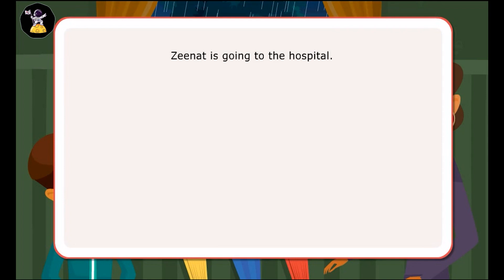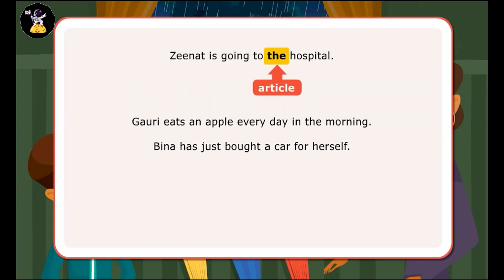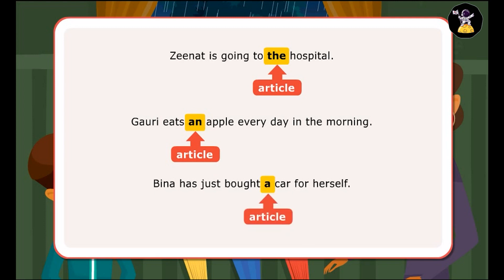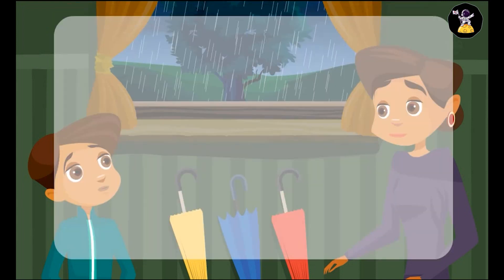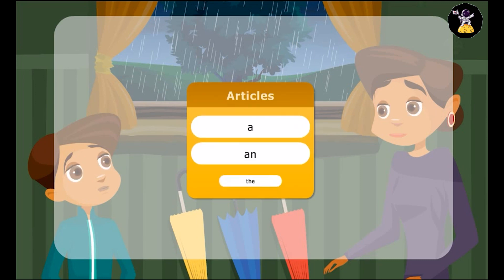Let us look at a few sentences. Zenith is going to the hospital. In the first sentence, 'the' is an article and it refers to a particular hospital. In the next sentence, 'an' is an article and refers to any single apple. In the third sentence, 'a' is an article and refers to a single car which is not specific. There are only three articles in English: A, An, The.